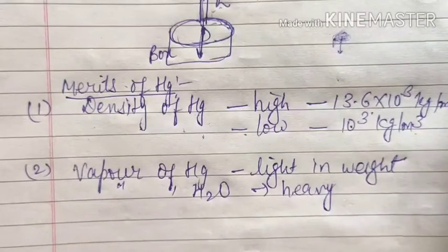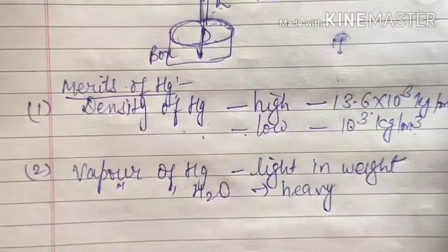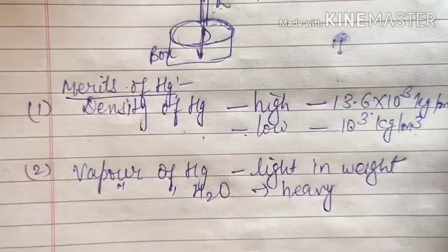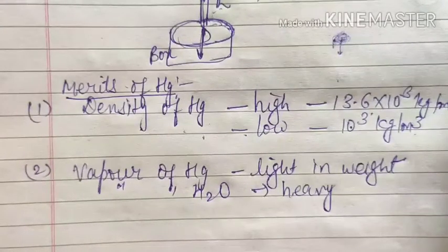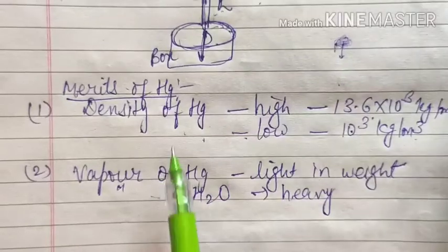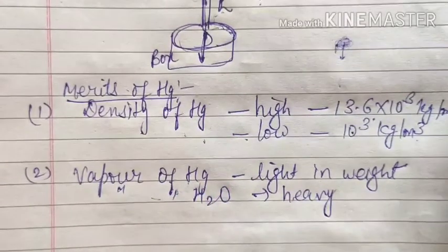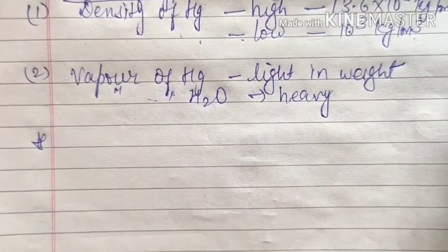The third point is that mercury does not stick to the walls of the glass tube, so you can take accurate readings. Water, on the other hand, forms a concave meniscus, leading to inaccurate readings. Additionally, mercury can easily be obtained in a pure state. So these are the main reasons why we use mercury and not water.